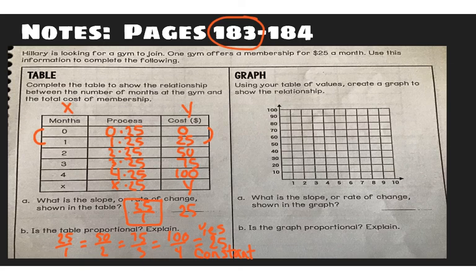Okay for the graph, using your table of values create a graph to show the relationship. So we want to graph each of those points. Remember our first, our x was zero for zero months, our y is zero also so we're just going to put a little dot on zero zero. We're going to have this represent months. And this will represent the cost on the side. For one month we have 25 dollars. I'm going to put a dot kind of in there. For two months the cost was 50 dollars. For three months the cost was 75. For four months the cost was 100. And we draw a line.